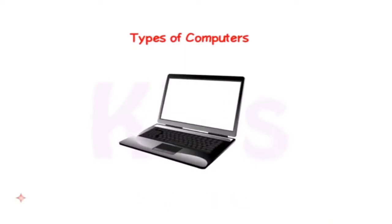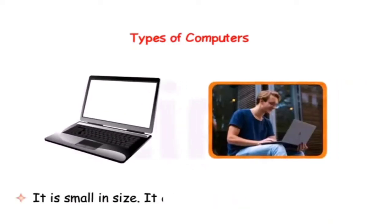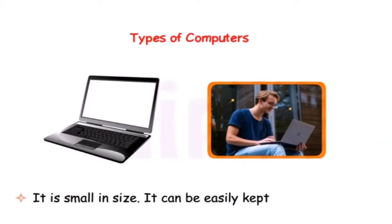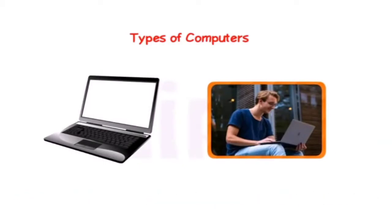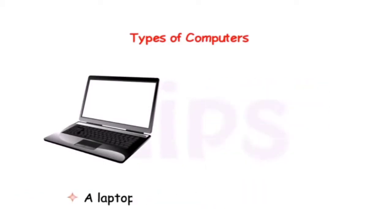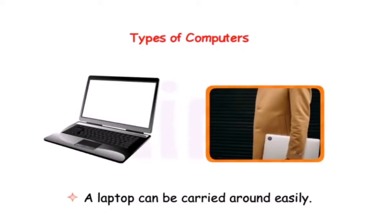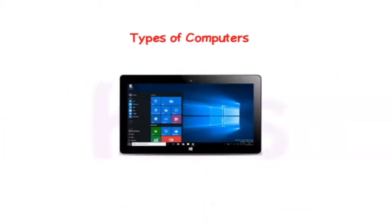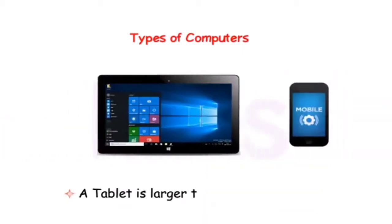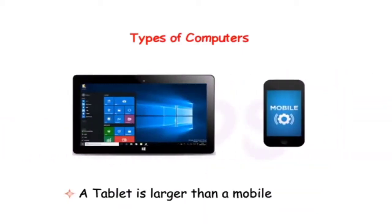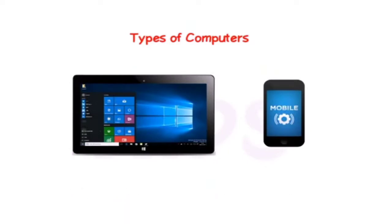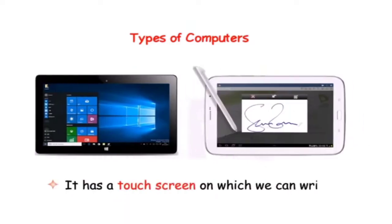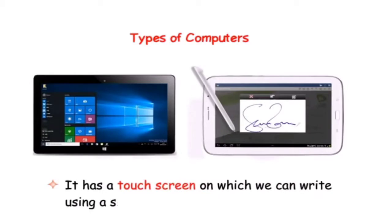A laptop can be easily kept on a table and carried around easily. A tablet computer is larger than a mobile phone. It has a touch screen on which we can write using a special purpose pen.